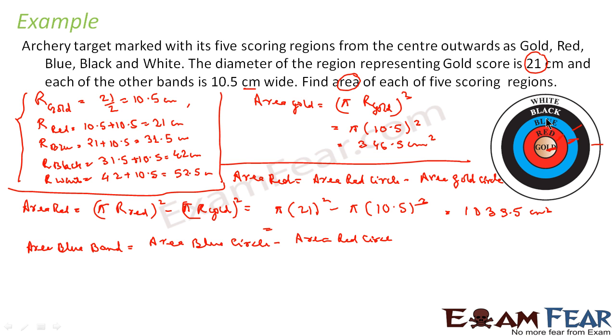See, from here, you take the whole area of blue circle, you will get all this. From this, you subtract this red circle, complete red circle. That will be nothing but, π r_blue square minus π r_red square.